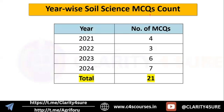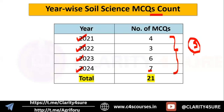Year-wise soil science MCQ count shows that in 2021 there were four questions, in 2022 there were three questions, in 2023 there were six, and in 2024 there were seven questions. There is no particular pattern they are following for soil science, but on average you can expect around five MCQs from the soil science part. It is an important and easy part for your IBPS AFO mains preparation.